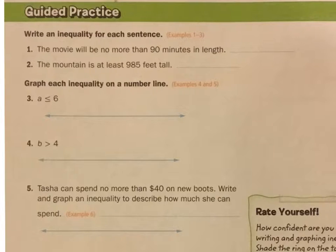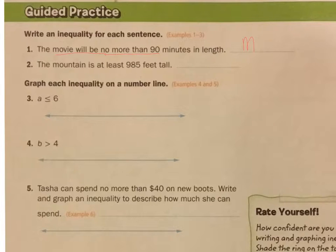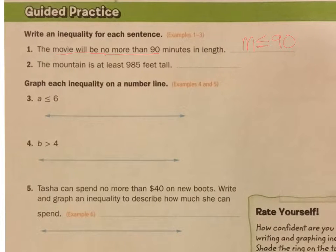The movie will be no more than 90 minutes, which means it won't be 91 minutes, 92 minutes, or 93 minutes. So I'm going to say the movie is going to be less than 90 minutes — but could it be 90? Let's read: the movie will be no more than 90. So it could be 90. So the movie will be less than or equal to 90 minutes.